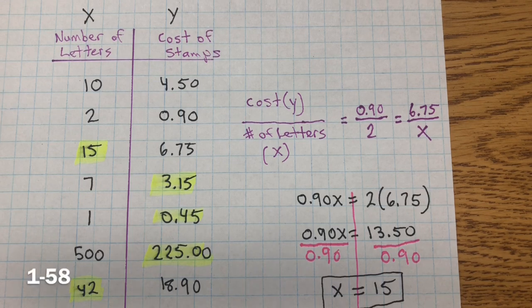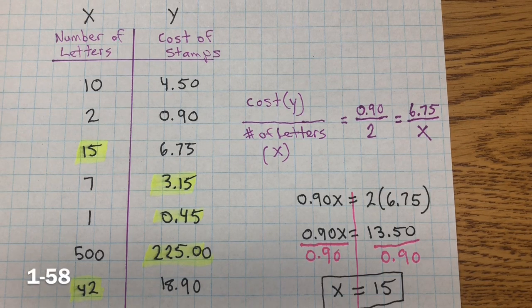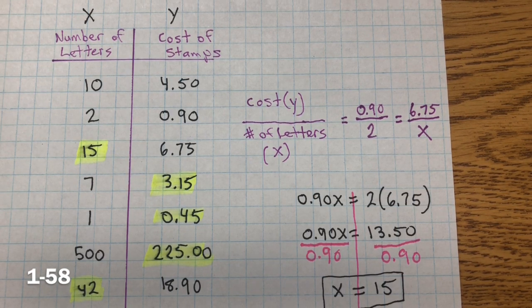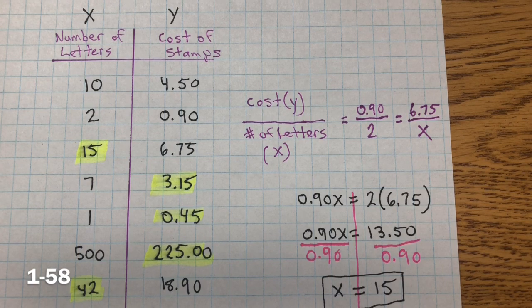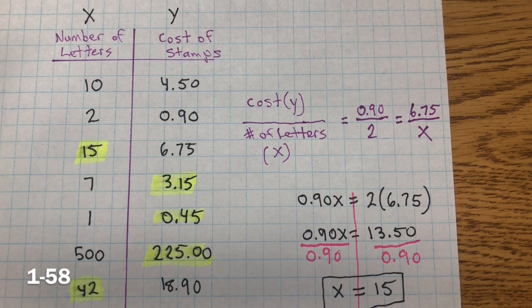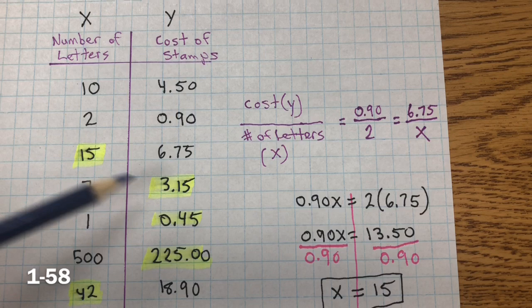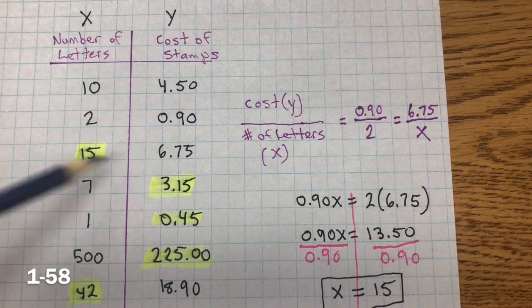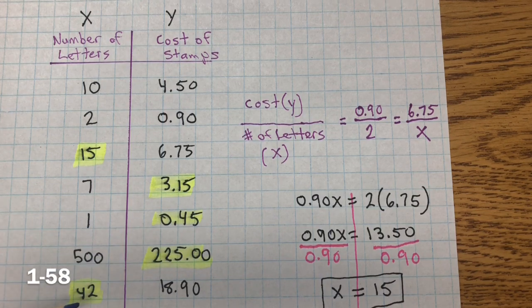In 158, Mr. Wright was making a table to figure out how much it costs to send a certain number of regular letters through the mail. You need to use proportional reasoning to complete his table. So, the highlighted values are the answers. Those were the missing values. Now, how did I get this?